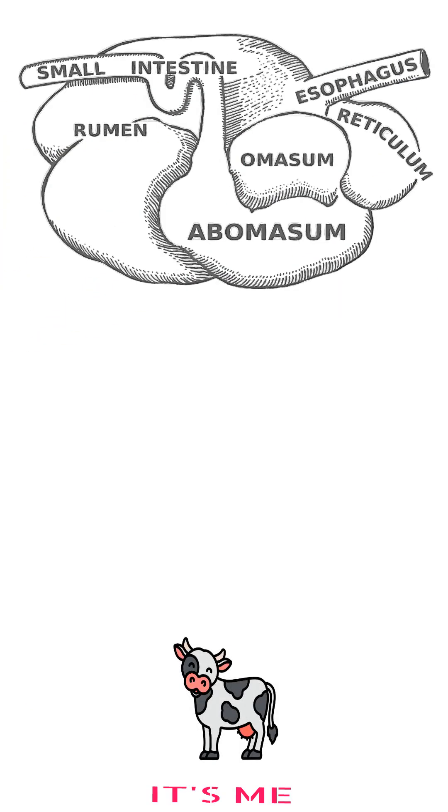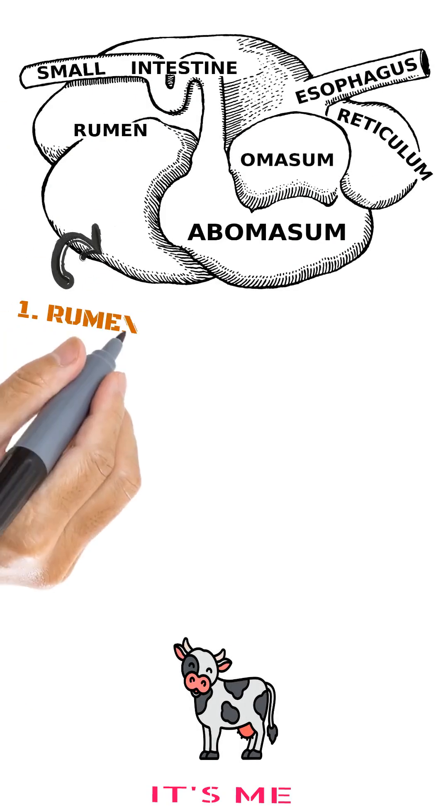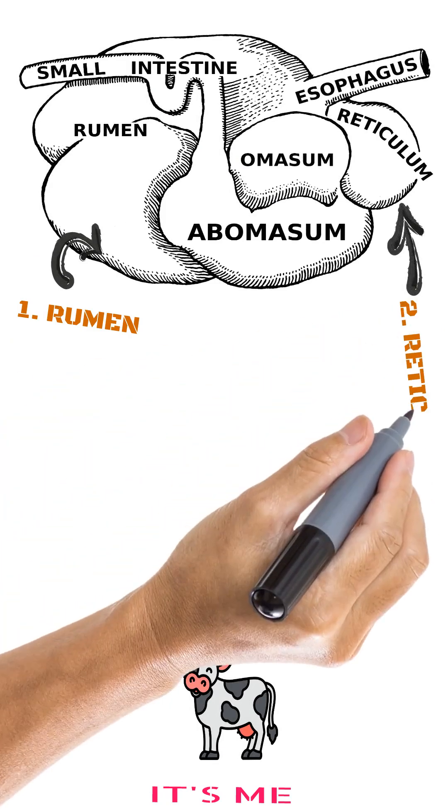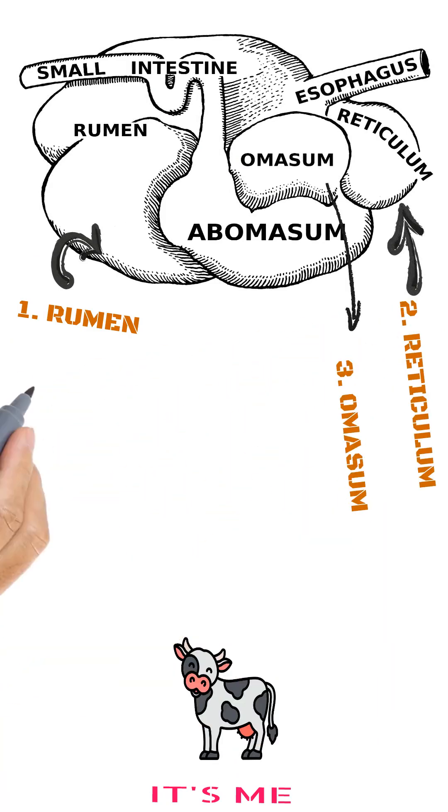So basically, if you look inside, cow stomach have these four compartments. First one is rumen, second one is reticulum, third one is omasum and finally last one is abomasum.